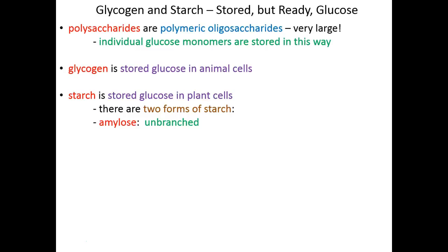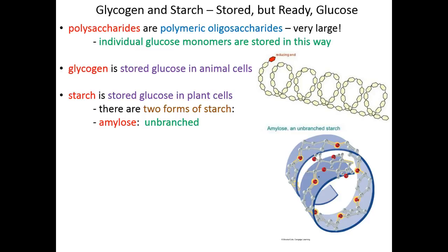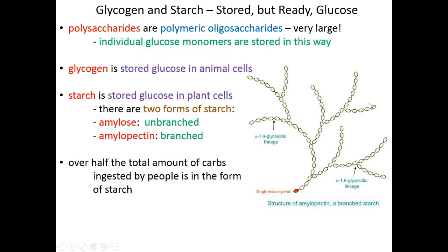One is called amylose, and that's an unbranched chain of glucose monomers — a single linear chain of glucose — but that chain is coiled so it takes up less room. The other starch form is called amylopectin, and amylopectin structurally looks a lot like glycogen: it is branched, with very long straight chains of glucose and occasional branch points giving rise to arms of that tree of amylopectin. About half of the total carbohydrates that human beings eat is in the form of starch — from starchy foods like wheat products and potato products.